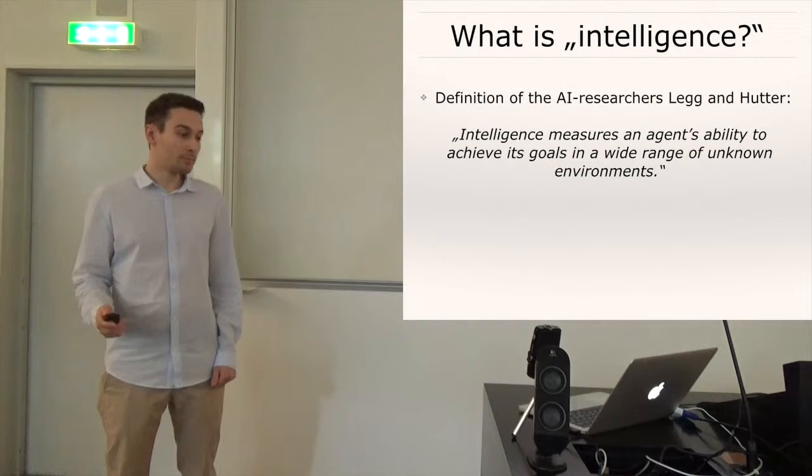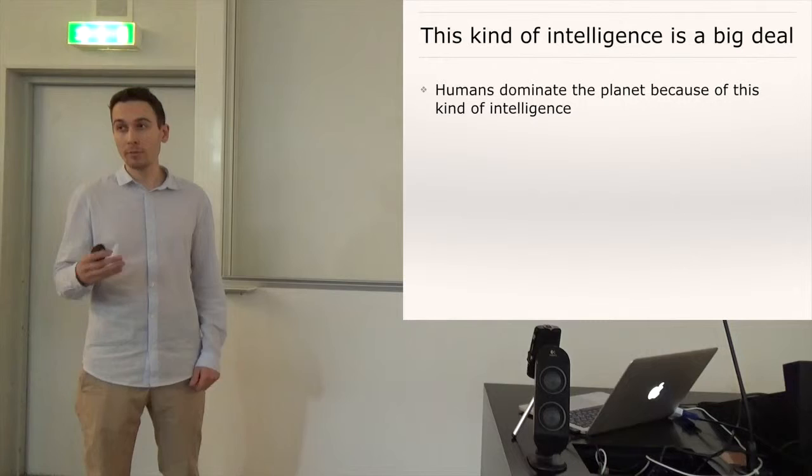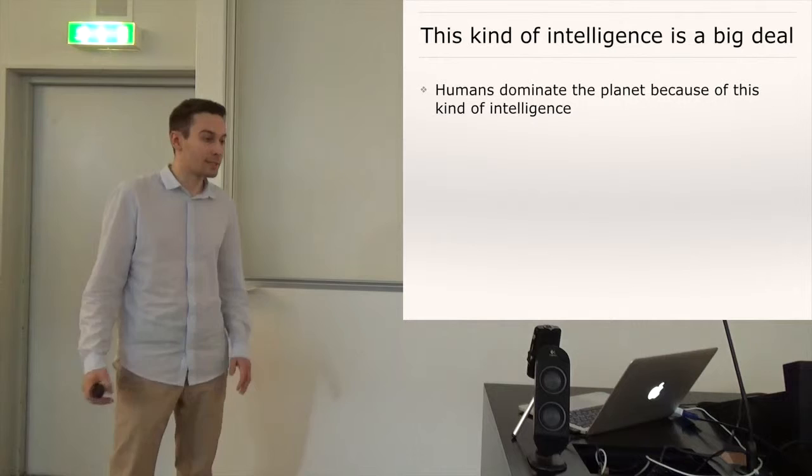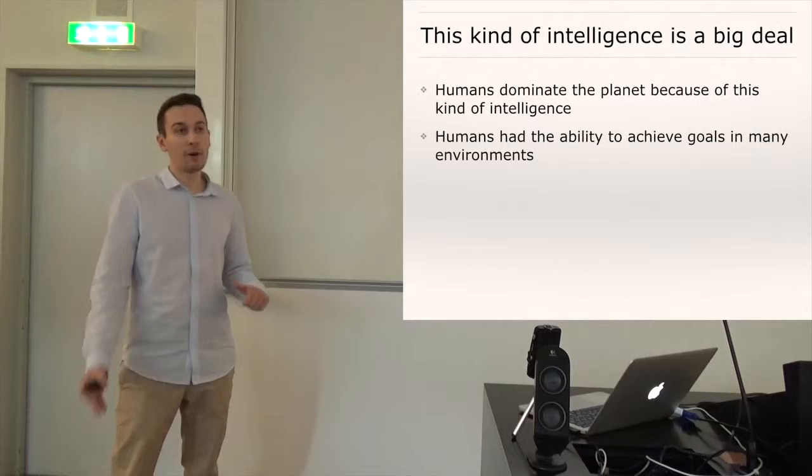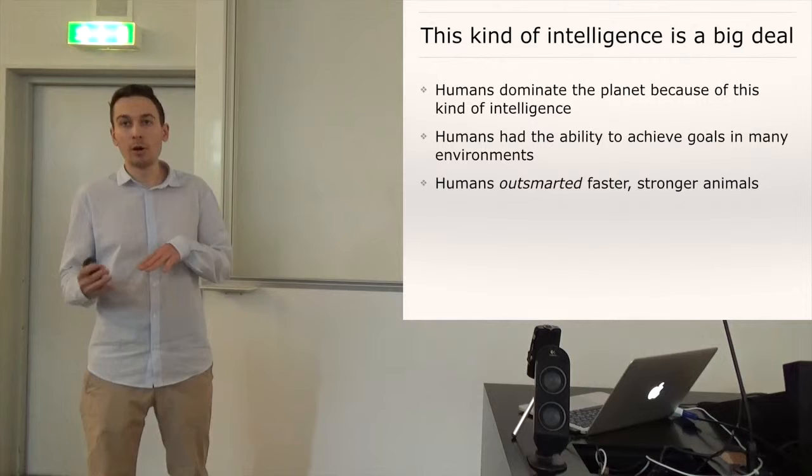So you might ask yourself why we use exactly this kind of intelligence. Well, exactly this kind of intelligence is a big deal and what we should worry about because exactly this kind of intelligence, homo sapiens, or we humans, basically took over the planet Earth and dominated all other animals because we were just able to achieve our goals in many environments, for example, by developing tools or spears to hunt bigger animals or by inventing clothes to keep us warm in cold climates.